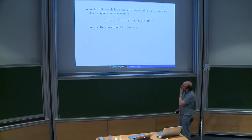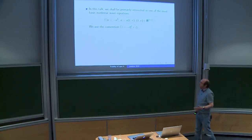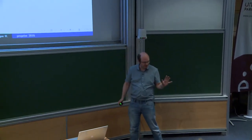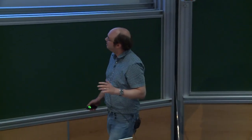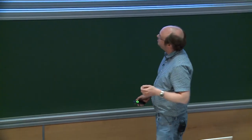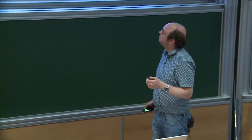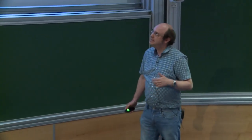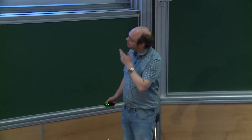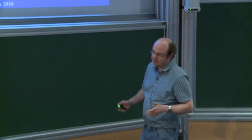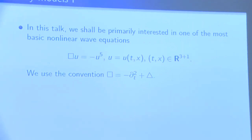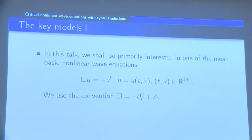What I am planning to talk about is very much related to what Professor Koenig talked about this morning and also the other day. So it's the same equation: box u is minus u to the 5 in 3 plus 1 space-time dimensions. My sign convention is slightly different, so I hope it doesn't confuse you. It's the focusing energy-critical wave equation.